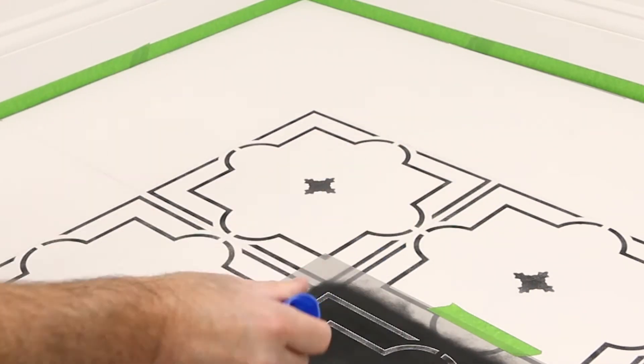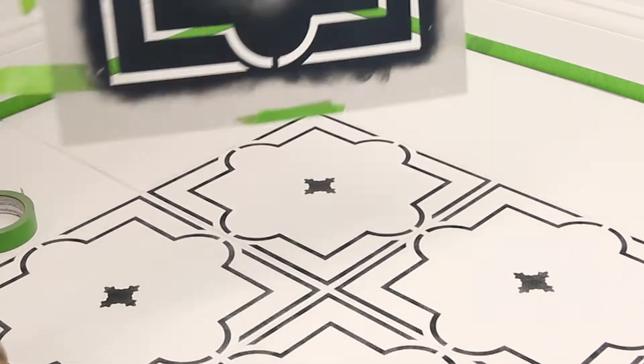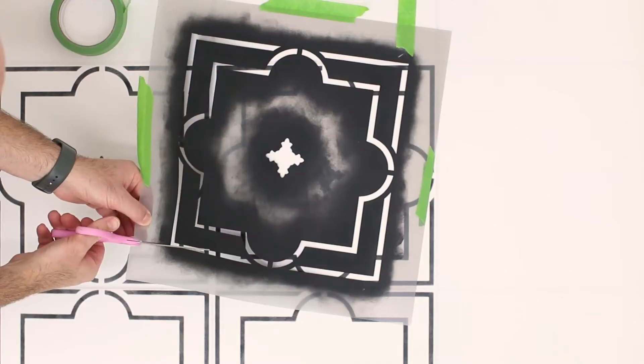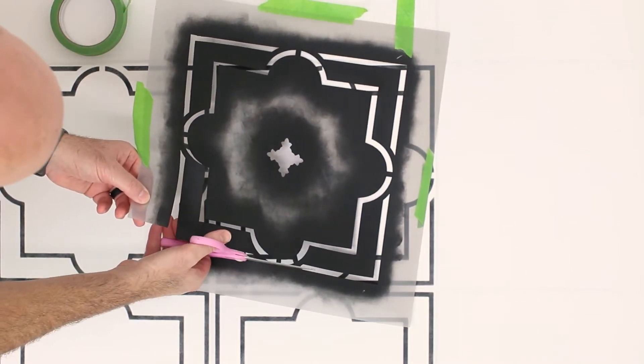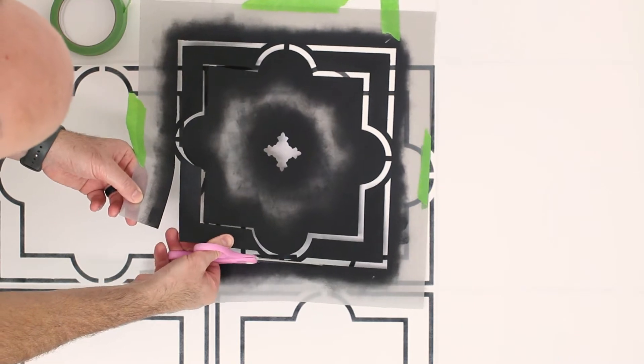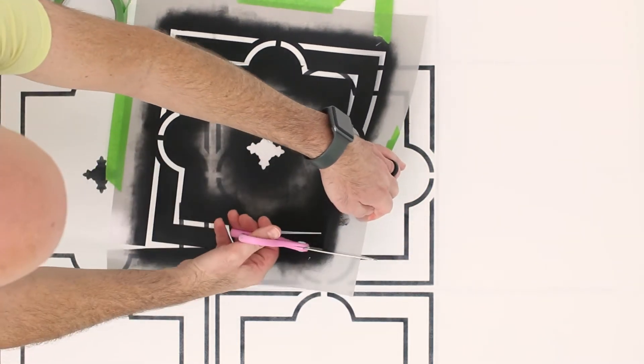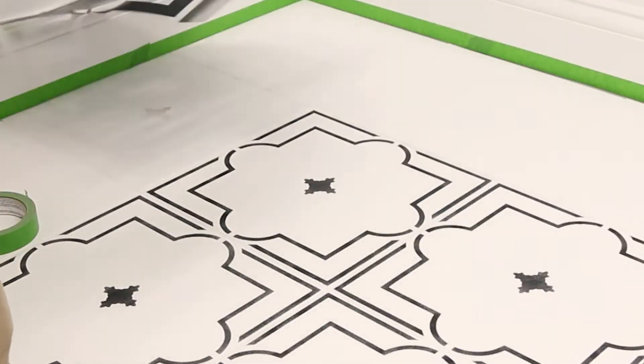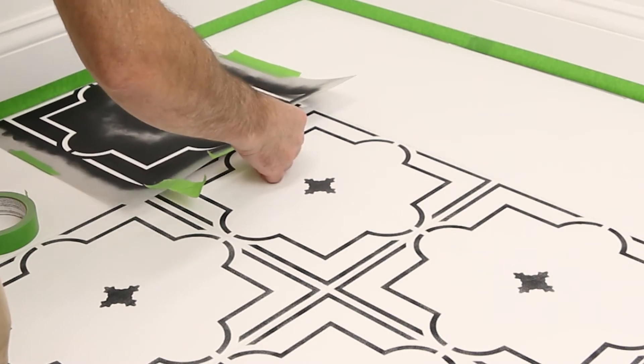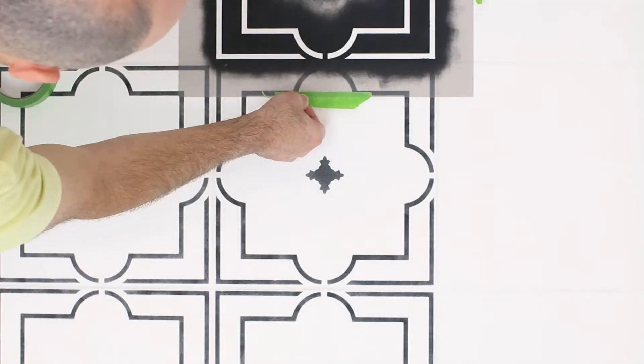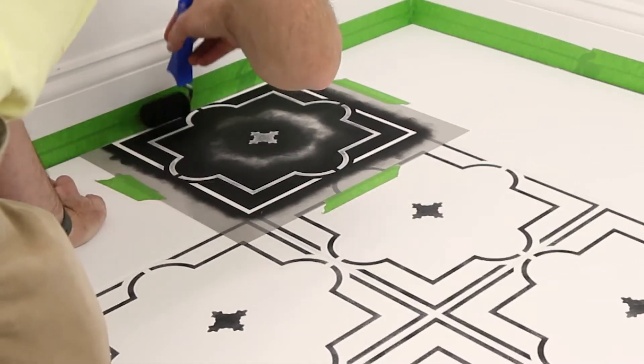Once all the middle tiles are completed, take a pair of scissors and trim one side of the stencil where the pattern ends. Place the stencil on the tile with the trim edge up against the wall.